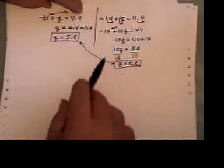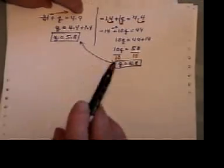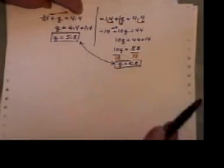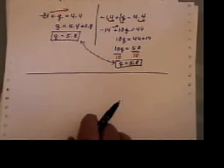If there's a lot of decimals in your question, you probably want to multiply everything by 10, 100, or 1,000 and get rid of the decimals. It's strictly up to you which way you solve the problem.